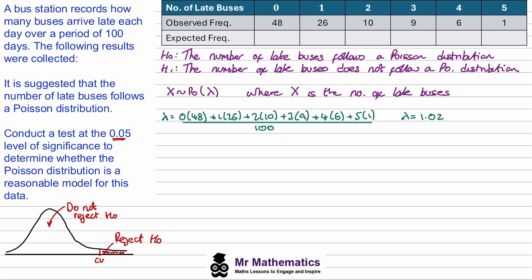So we need to find the critical value. And to do this we need the degrees of freedom. We've lost one degree of freedom here. But to find the number of columns we need to work out the expected frequencies.